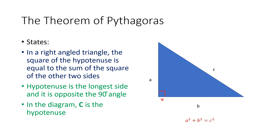So the theorem says, in words, in a right angle triangle, the square on the hypotenuse is equal to the sum of the squares on the other two sides. In other words, A squared plus B squared is equal to C squared.